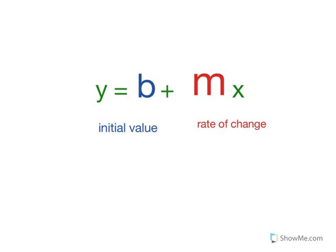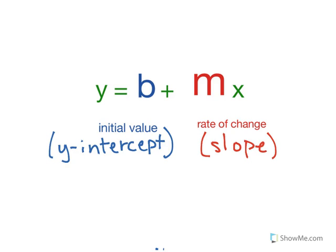So just as a review, in this form of y equals b plus mx, b which we're calling our initial value has the official name of y-intercept, and m which we're calling our rate of change has the official name of slope. Please make sure in any problem you can identify what y stands for, what b stands for, what m stands for, and what x stands for. Let's look at one more problem.